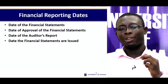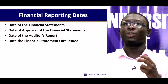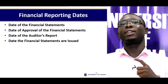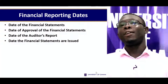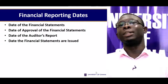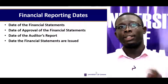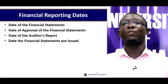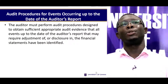To understand these two events properly, we group the reporting dates of financial statements. One: date of the financial statement. Two: date of approval of the financial statement. Three: date of the auditor's report. Four: the date the financial statements are issued. So we have the date of the financial statement, the date of approval, the date of the auditor's report, and the date the financial statements are issued.